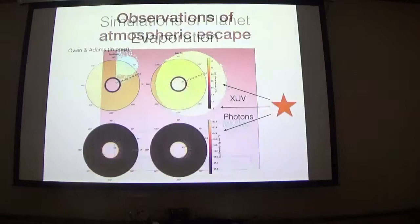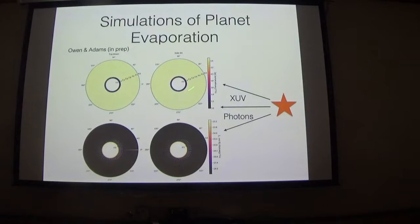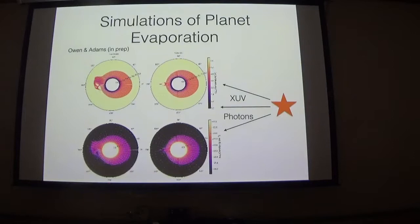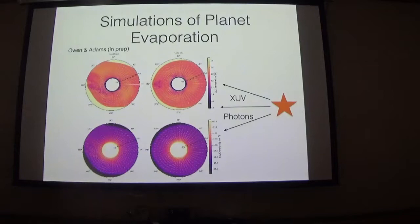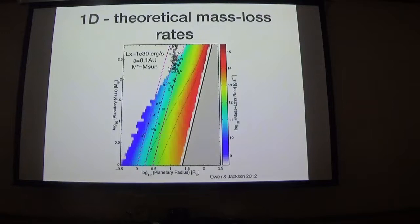Theoretically, high-energy photons heat the planetary atmosphere, driving powerful hydrodynamic outflows that lead to significant mass loss. A nice 3D simulation illustrates this process. Looking at how mass loss rate varies as a function of planetary parameters: on a planet mass versus planet radius plot, the color map shows expected mass loss rates from theoretical calculations. The greyed-out region represents planets larger than their Roche radius — unbound objects. The white region marks the transition between the hydrodynamic regime and Jeans escape.